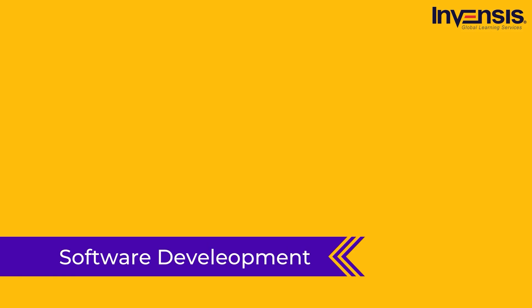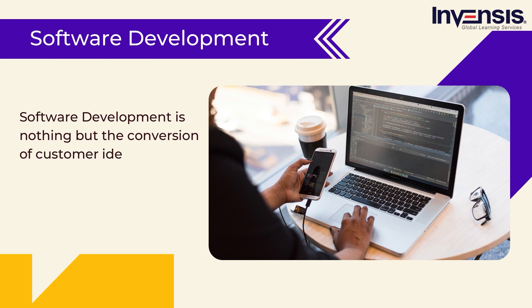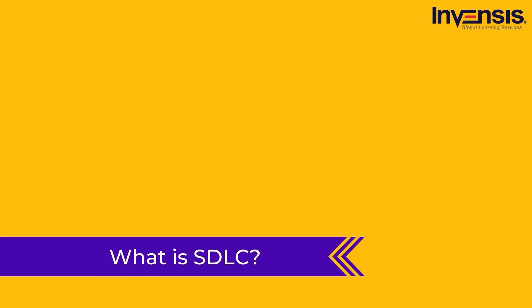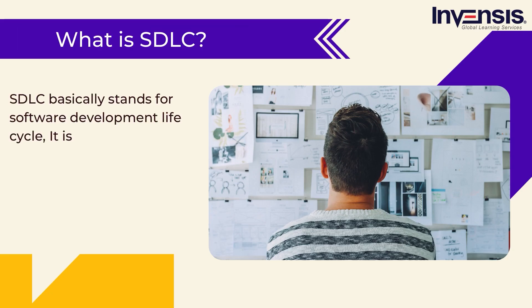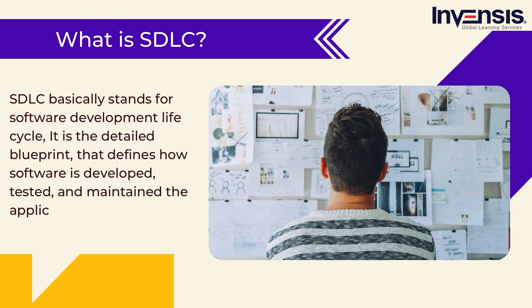I'm sure you might have heard the term software development. Software development is nothing but the conversion of customer ideas into complete operational software. This process is known as software development. Software development is vast and it requires a systematic plan to release the software, and this systematic process is known as SDLC. SDLC basically stands for Software Development Life Cycle — it is the detailed blueprint that defines how software is developed, tested, and maintained. SDLC outlines the methodology for the betterment of application development, also known as the application development life cycle.